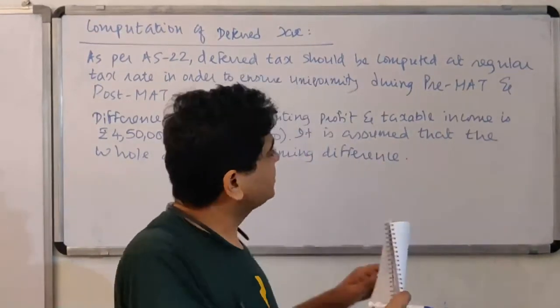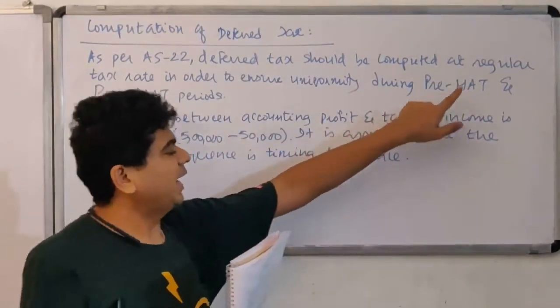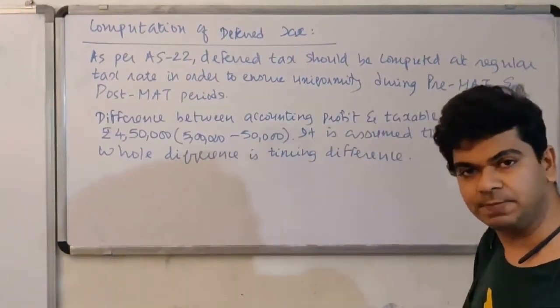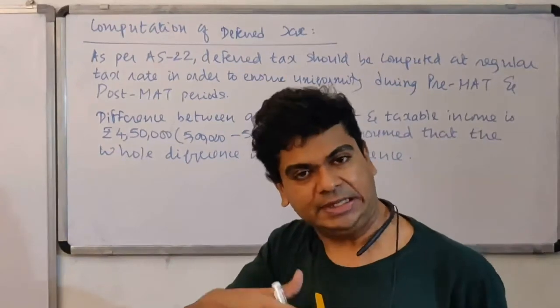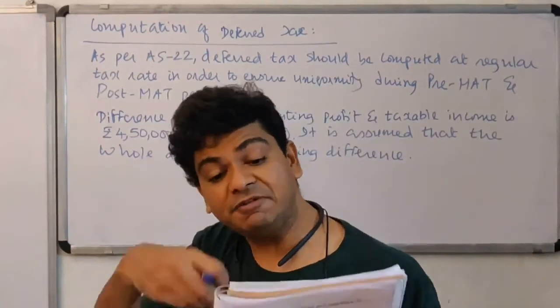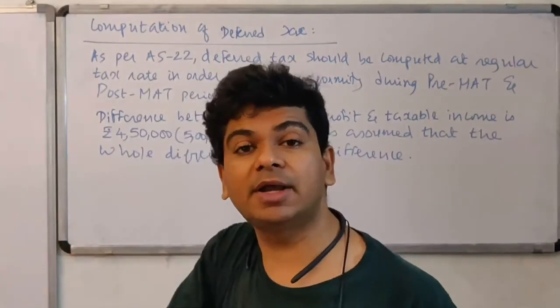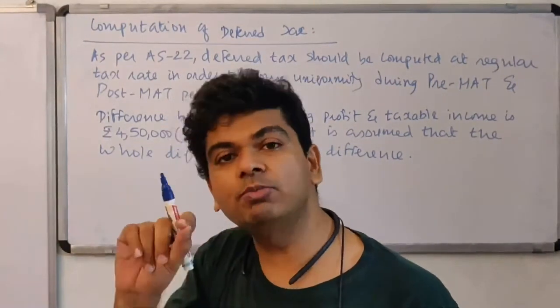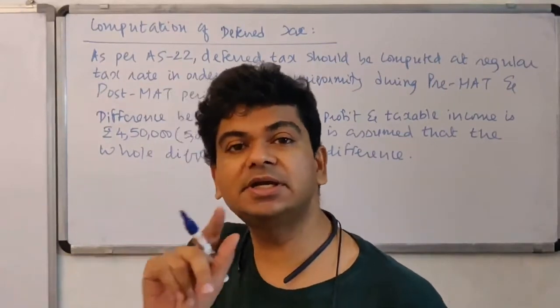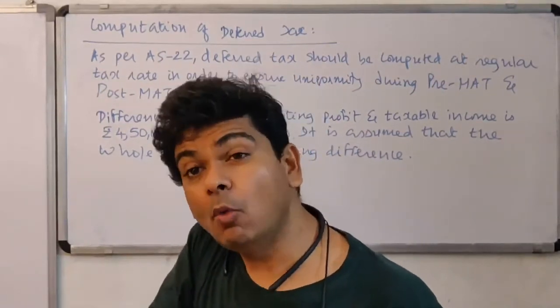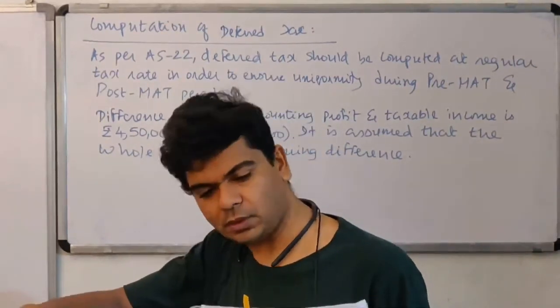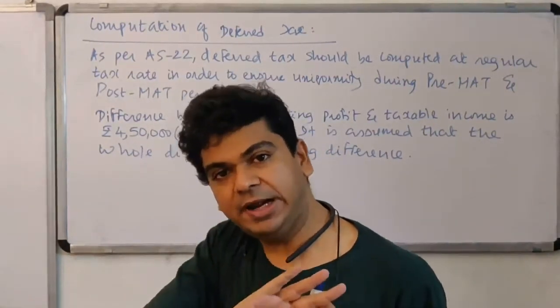Question is what should I recognize? Timing difference is there, 4 lakh 50. I will multiply with the regular tax rate 30%, that will give me the deferred tax. Is it deferred tax asset? Is it deferred tax liability? What is the nature of the deferred tax?